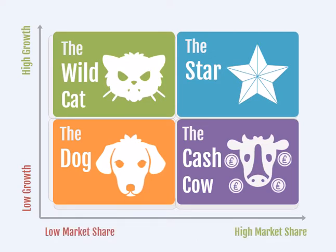There are four quadrants within the box. At the top right-hand section we have the stars. These are the organisations or products that have a high market share and operate within a market that is growing extensively. The stars are high-performing and deliver income and profit for the organisation. When market growth slows, the stars typically move to the bottom right-hand quadrant and become cash cows.